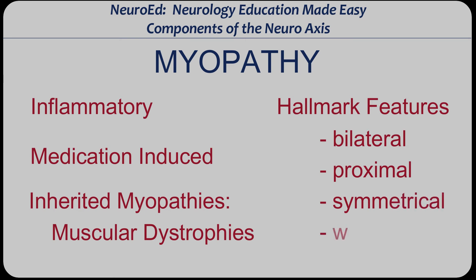There are some exceptions to the rule, but bilateral proximal symmetrical weakness is the most important generality you should remember. One of the more important exceptions would be myotonic dystrophy, which is an inherited myopathy that usually causes distal weakness. Another exception would be inclusion body myositis, which causes bilateral proximal leg weakness but bilateral distal arm and leg weakness. That's a quick summary of a myopathy.